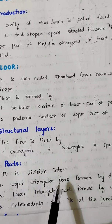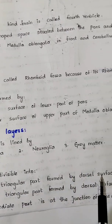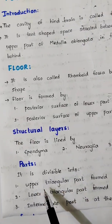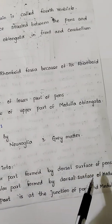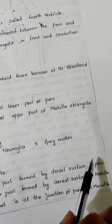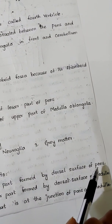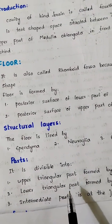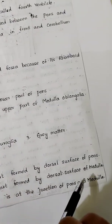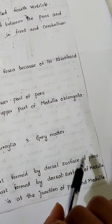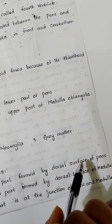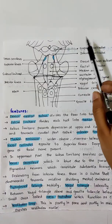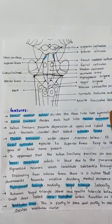The floor of the 4th ventricle is divisible into three parts. The upper triangular part is formed by the dorsal surface of the pons. The lower triangular part is formed by the dorsal surface of the medulla. The intermediate part is the junction of the pons and medulla.